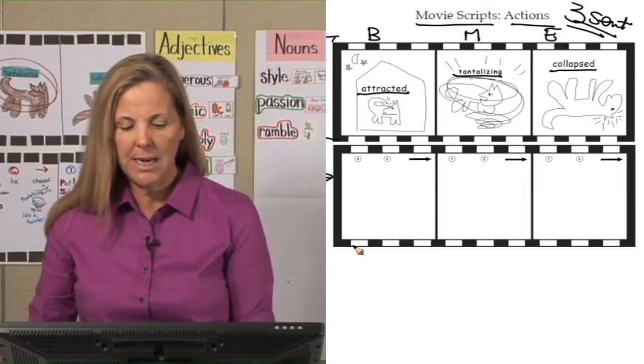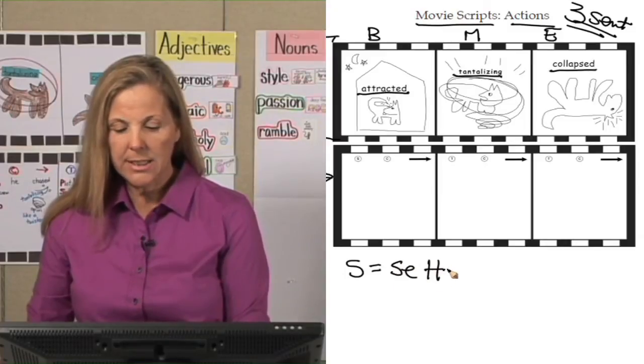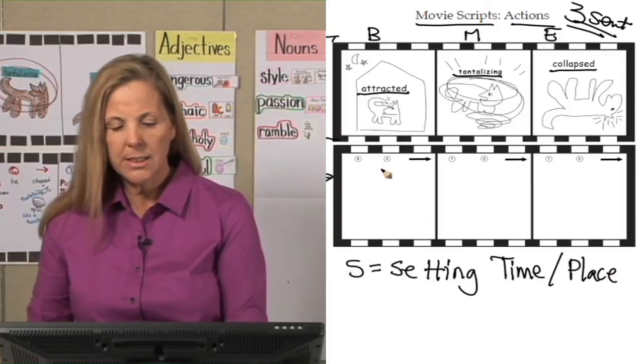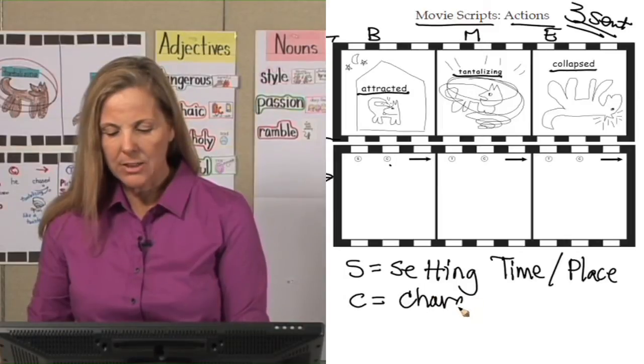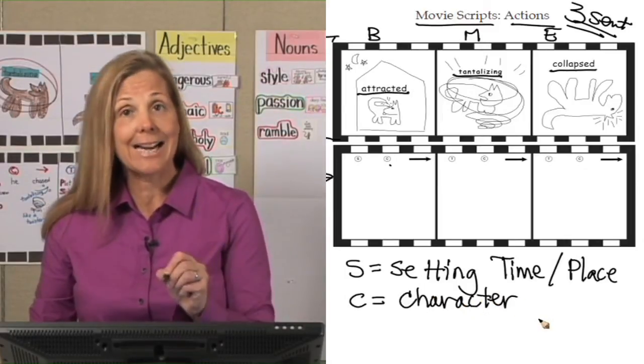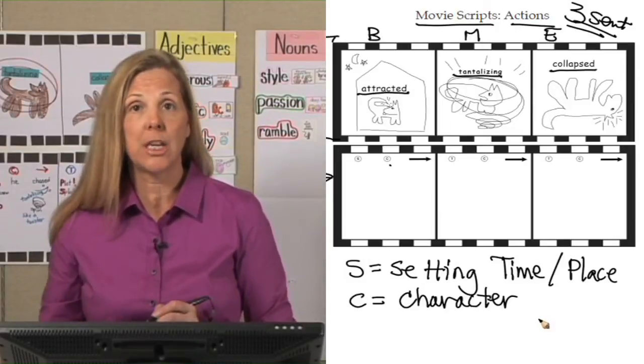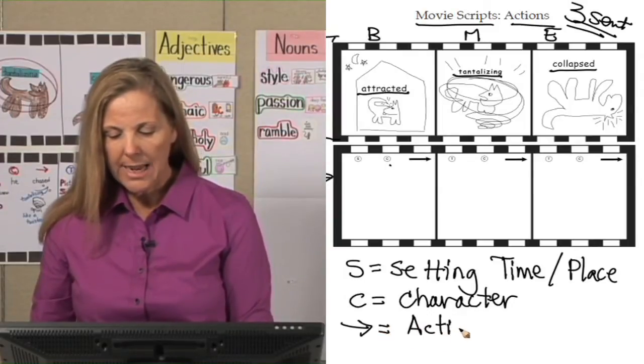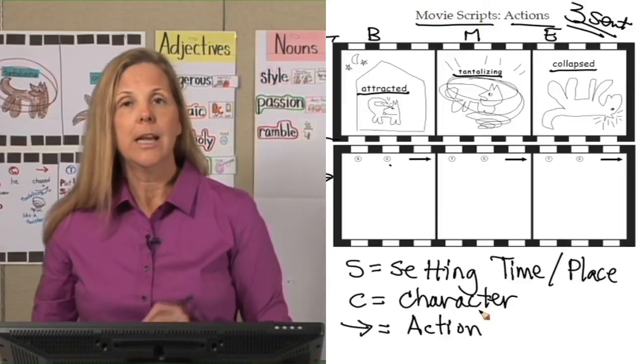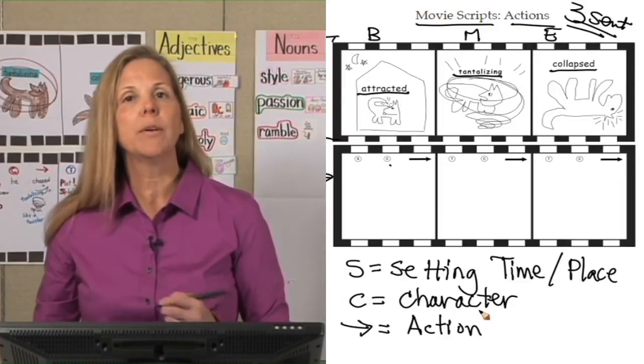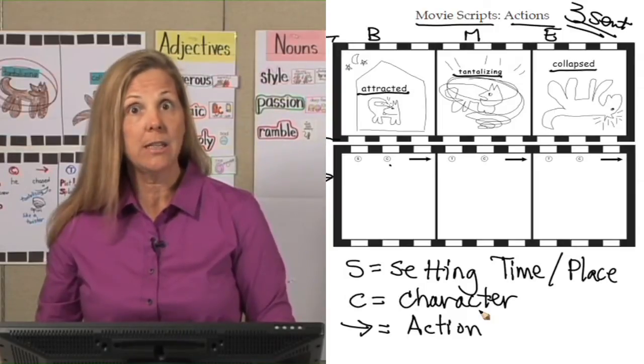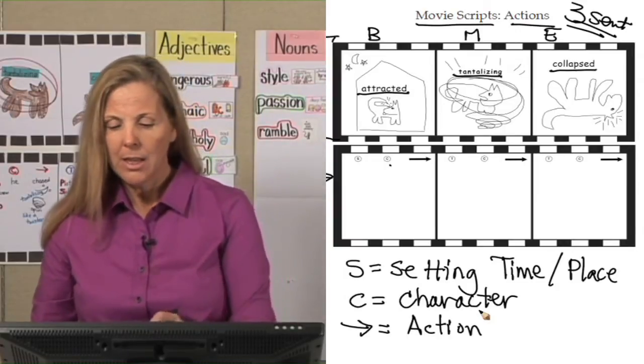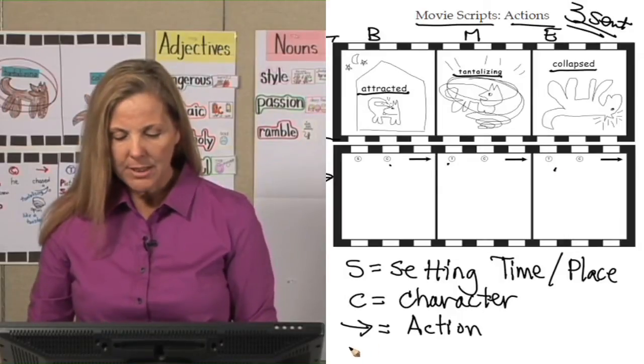SC arrow in the beginning box. The S is for setting, and setting is going to tell us time and place. The C is for character. That is going to be who is doing the action. The arrow in that beginning box is action. What did that character do in that first box? And notice I said, what did the character do? That's because you want the verbs, the action that begins the predicate of this sentence, to be in the past tense because stories are told in the past tense.